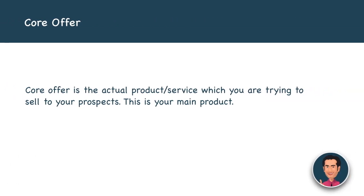The next part is something called the core offer. The core offer is the actual thing which you were selling in the first place on your landing page. This used to be number one in the sequence, but I suggest we don't do it at number one — do it at number four. The core offer is the actual product or service which you're trying to sell to your prospects. This is your main product, your key product.